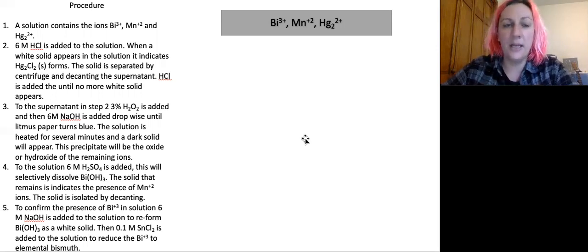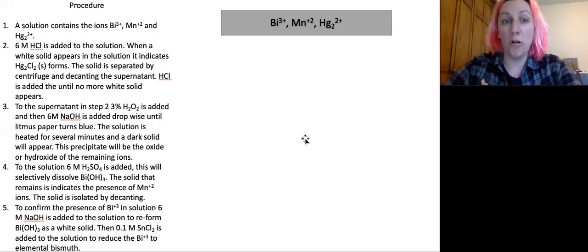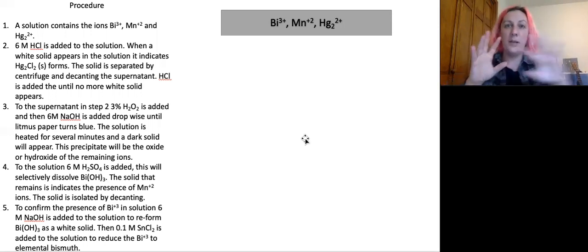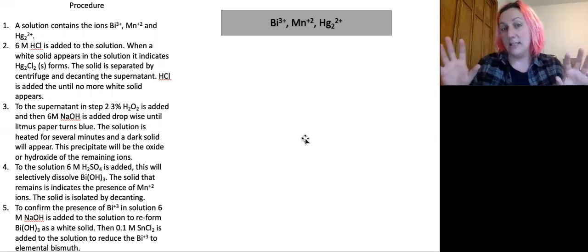So the first step of my procedure is to add six molar hydrochloric acid to the solution, and a white solid will appear. This will indicate that mercuric mercury chloride, which will be a white solid, will form. And this is essentially going to separate my mercury from my bismuth and my manganese.